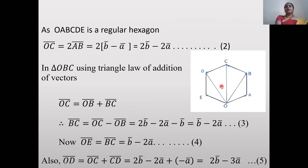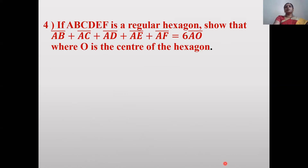For triangle ODC, OD̄ = OC̄ + CD̄. Now DC̄ = OĀ = ā, so CD̄ = -ā. Therefore OD̄ = (2b̄ - 2ā) + (-ā) = 2b̄ - 3ā.